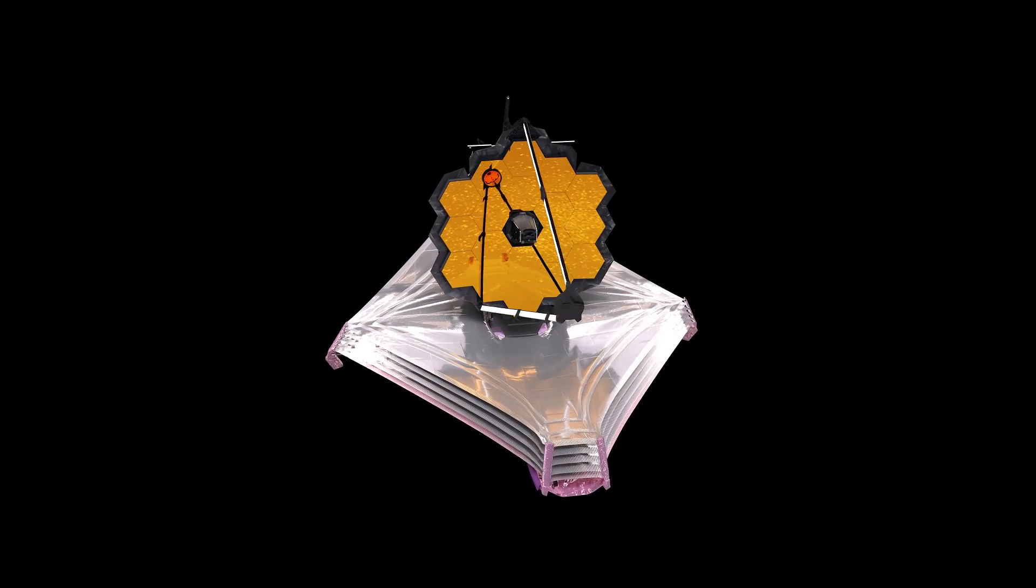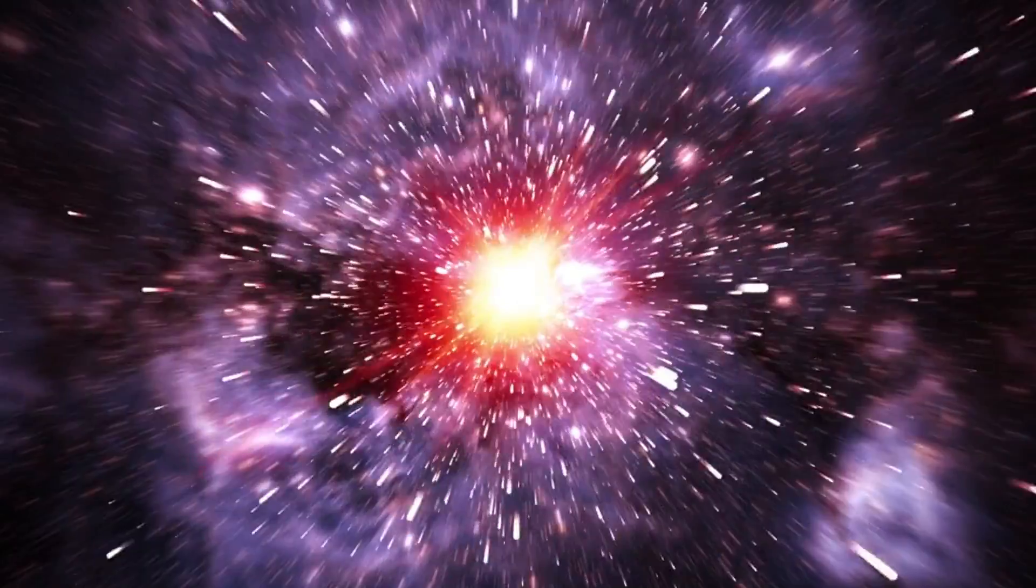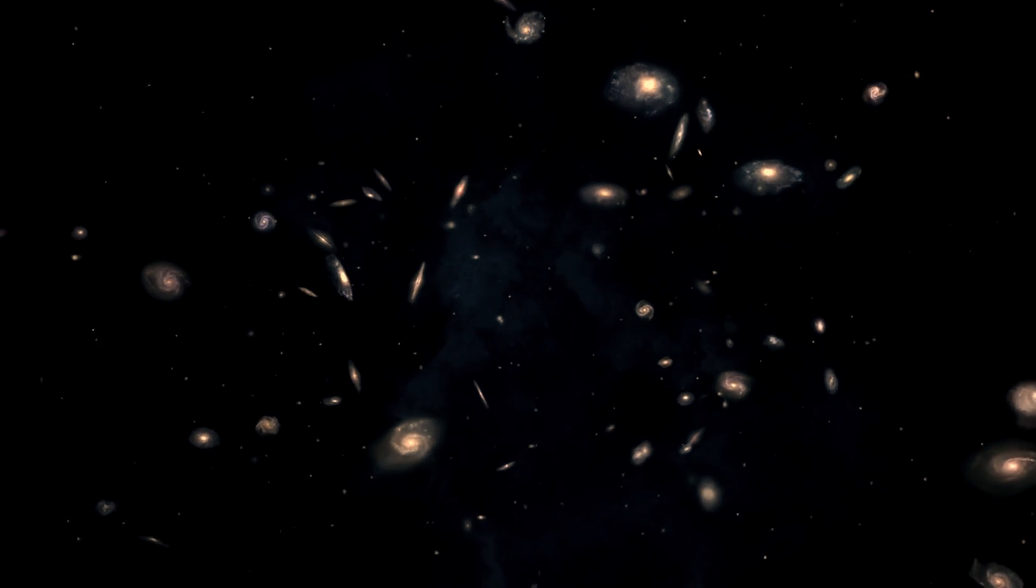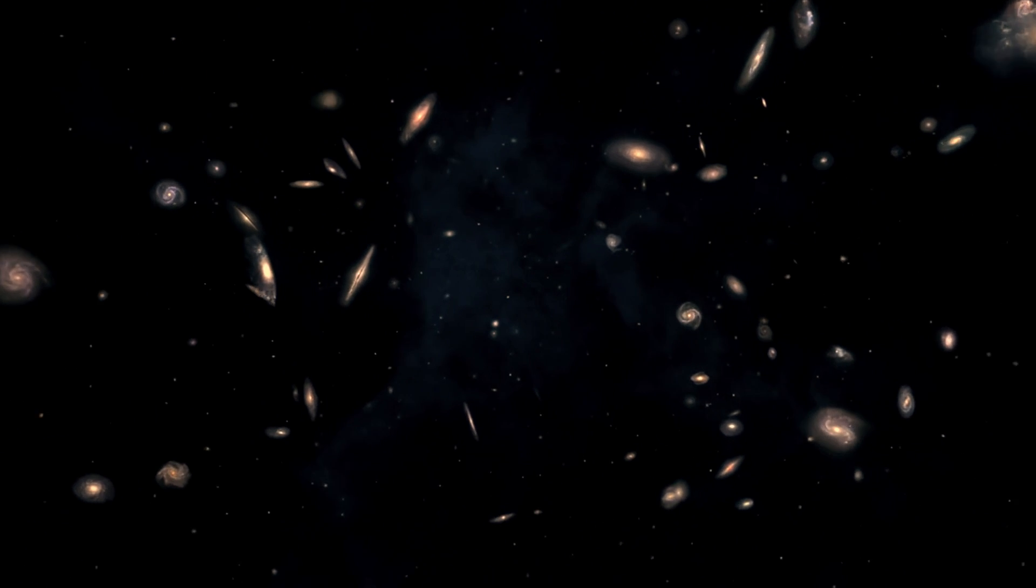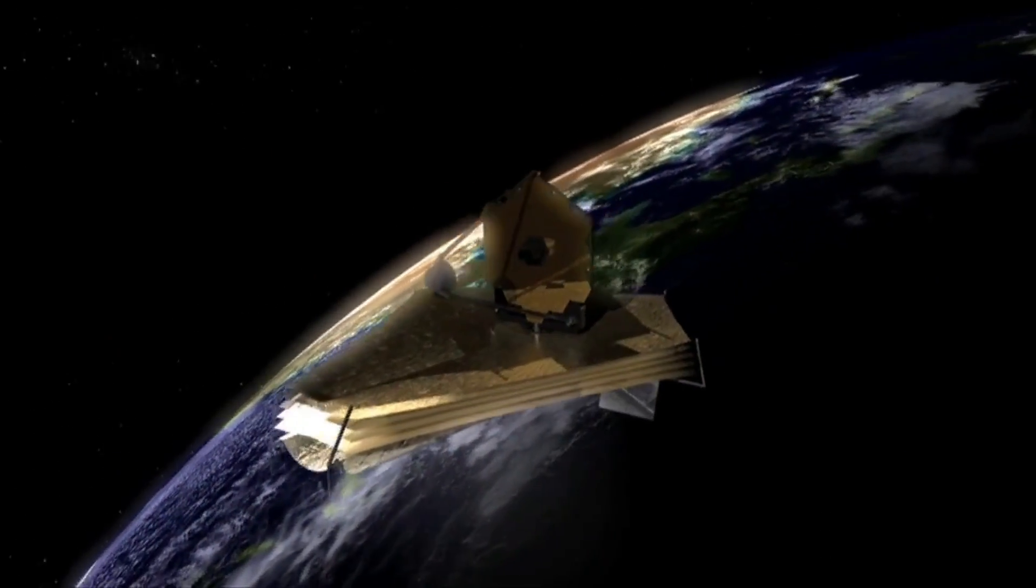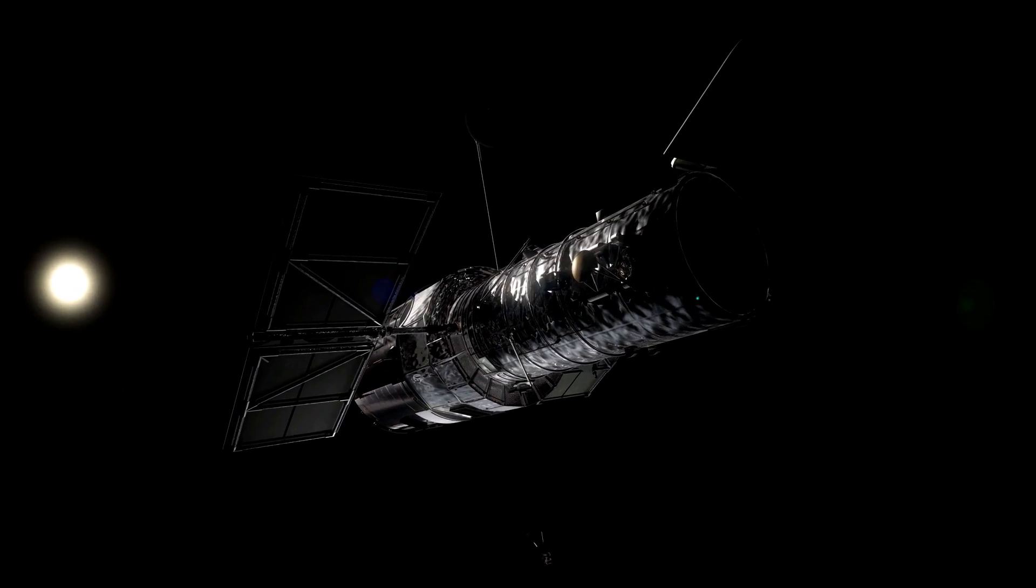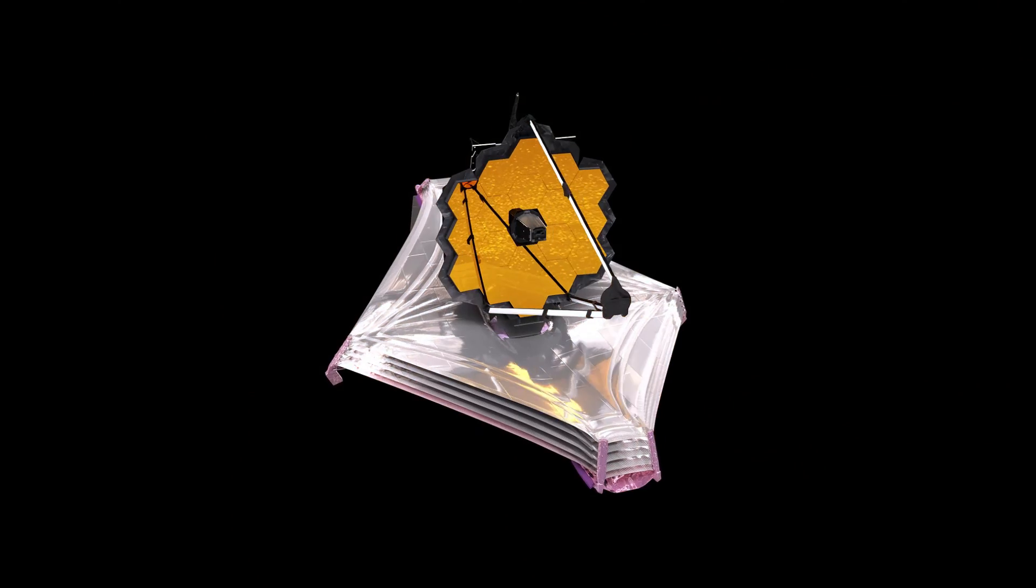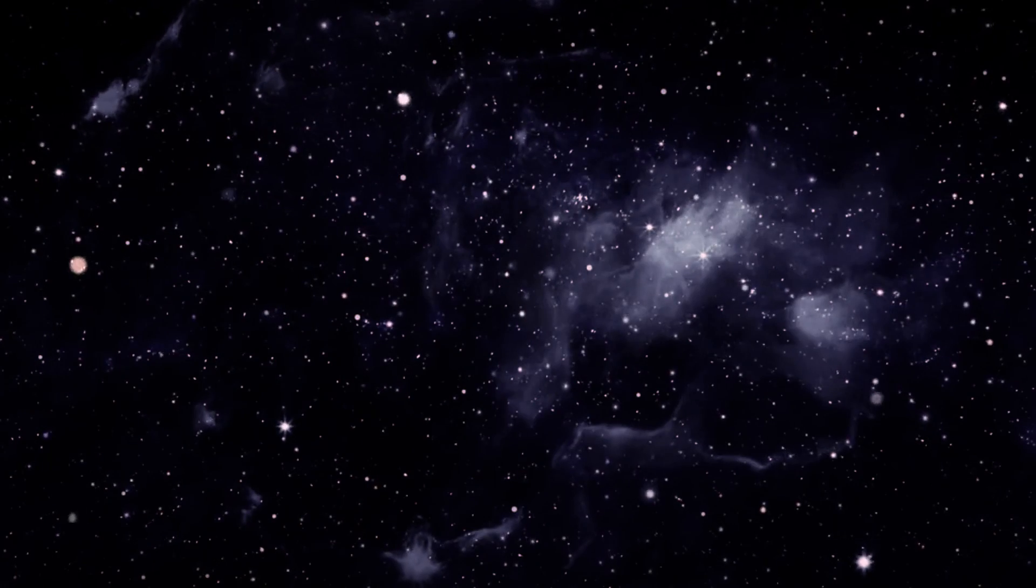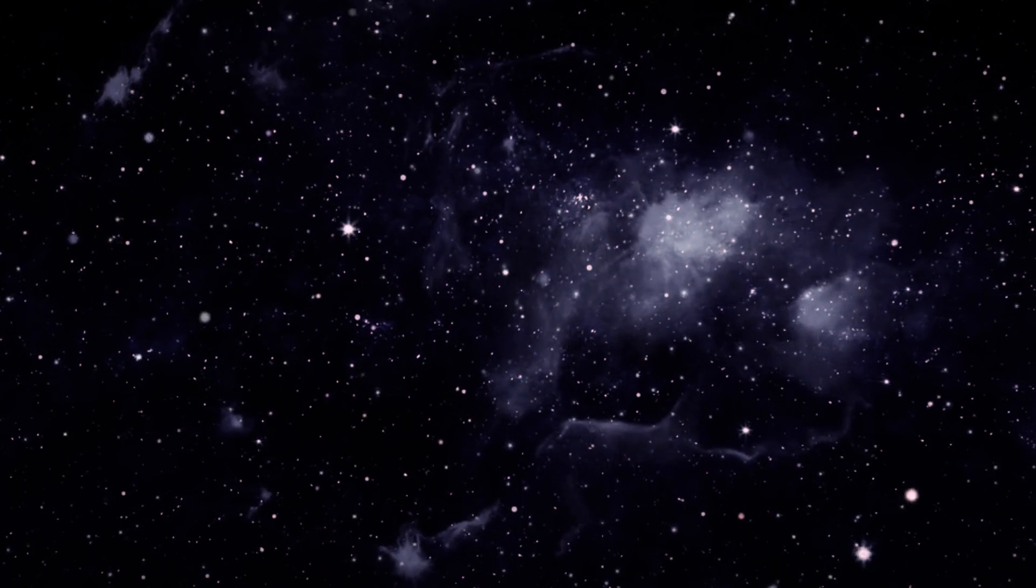The JWST data also indicate that the galaxy had a very short and intense burst of star formation, lasting somewhere between 30 million to 90 million years, before it abruptly stopped, leaving behind a population of old and red stars that emit mainly infrared light. This is why the JWST was able to detect it, while other telescopes could not. The JWST is the only telescope capable of seeing such faint and distant galaxies and uncovering their mysteries.